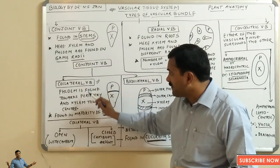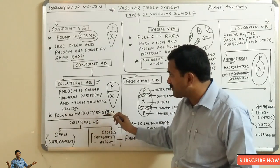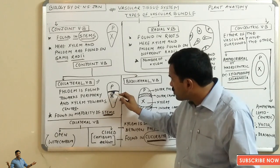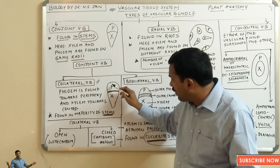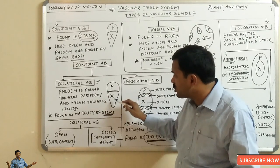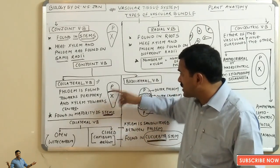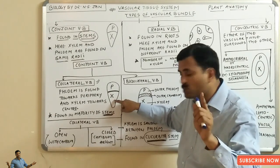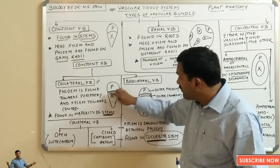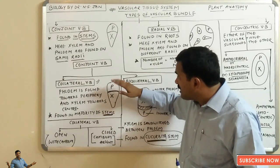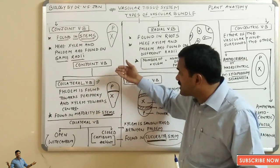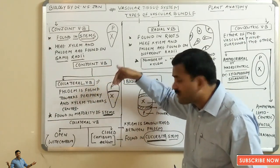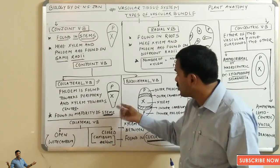The collateral vascular bundle is the feature of the majority of stems. In a collateral vascular bundle, phloem is always found towards the periphery and xylem is present towards the center. We cannot write it the opposite way — phloem is always towards the outside and xylem faces towards the central axis.